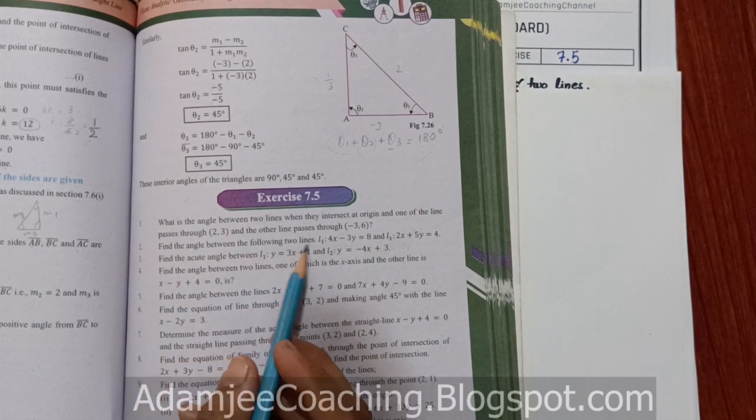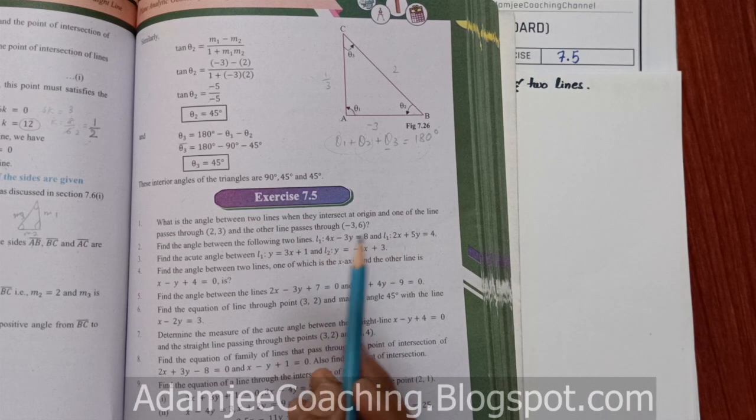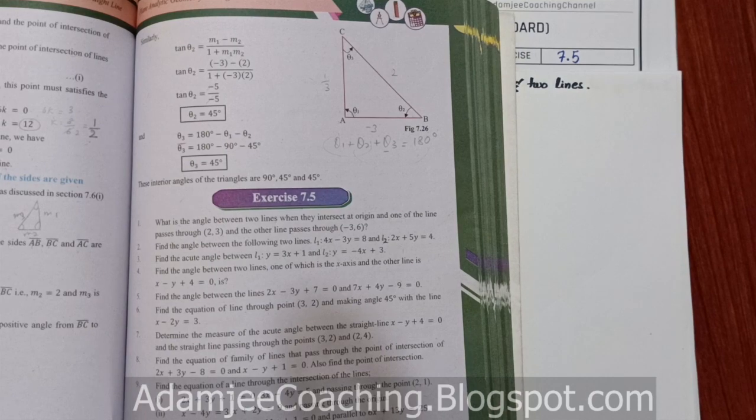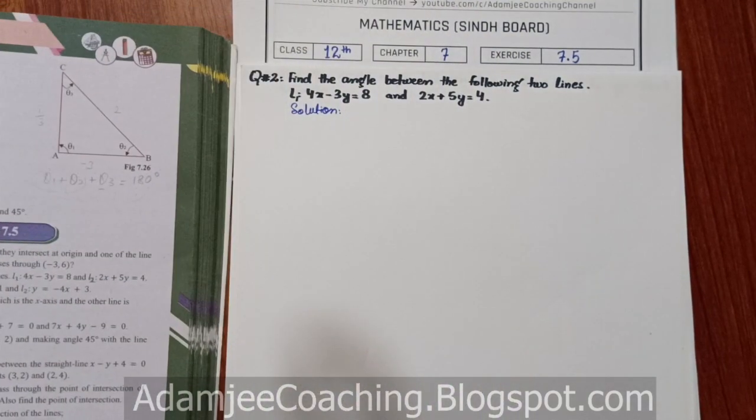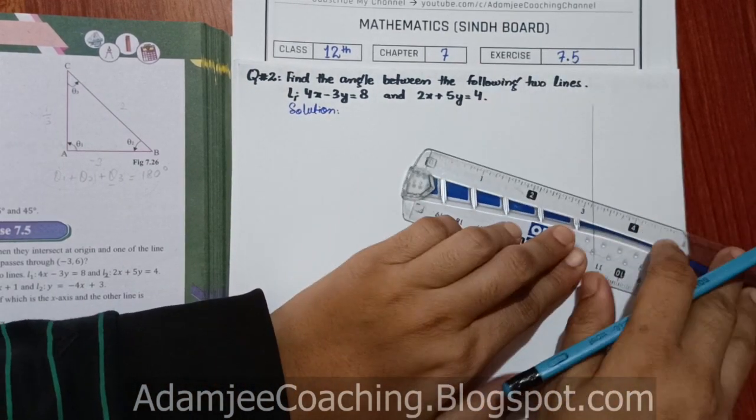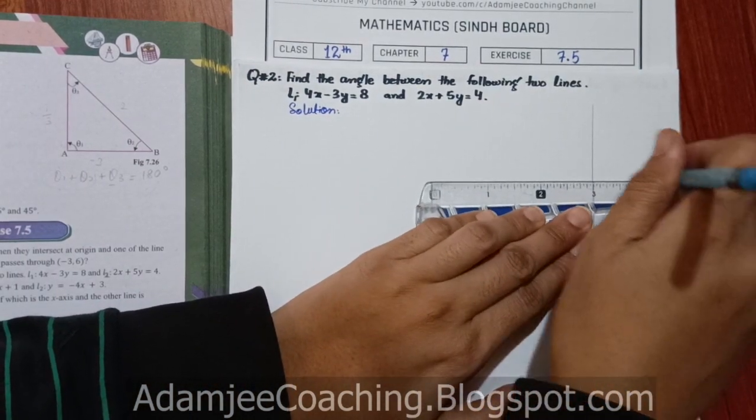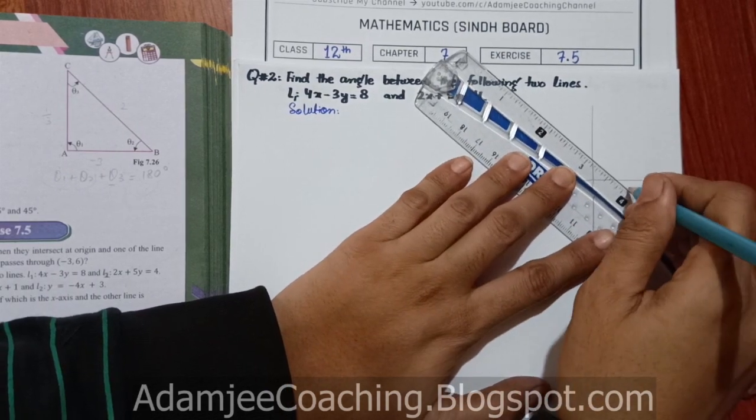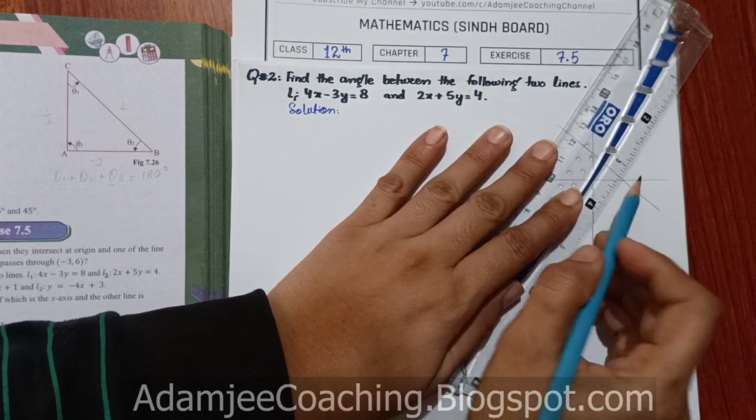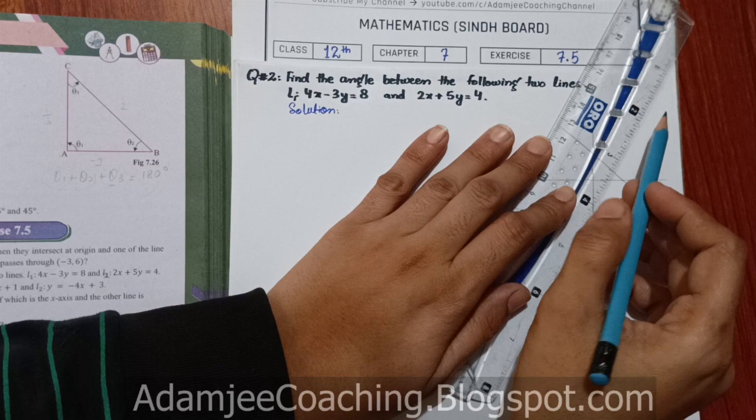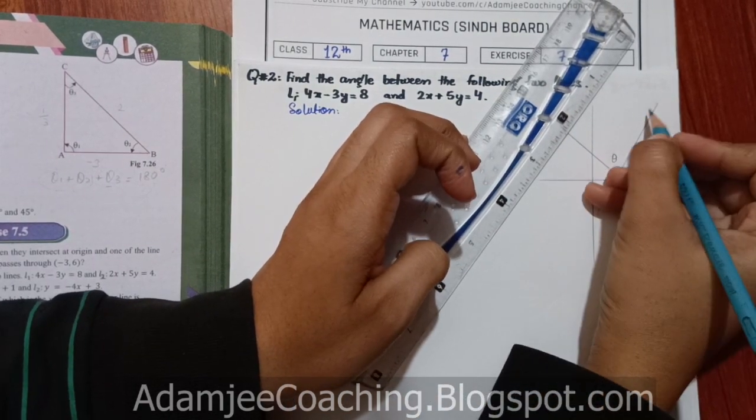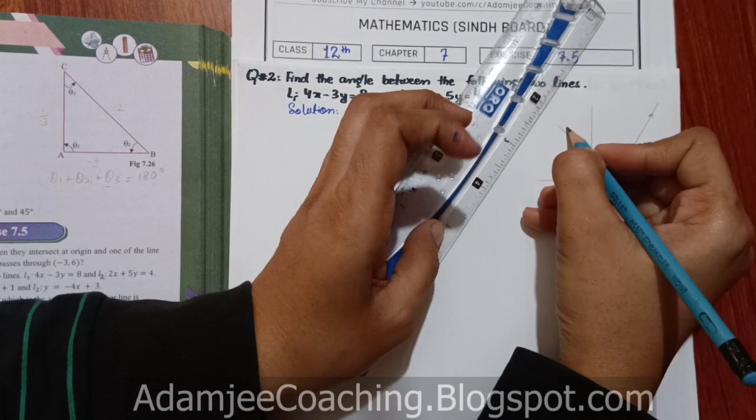Find the angle between the following two lines. There are two lines L1 and L2. How do we find the angle? We just assume this line L1 and the line L2.